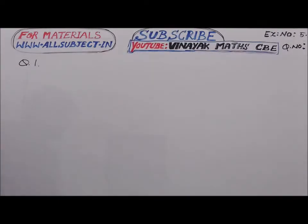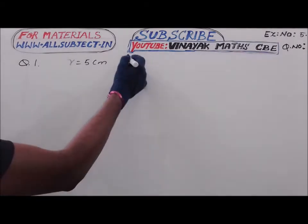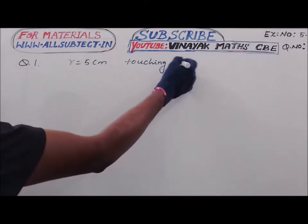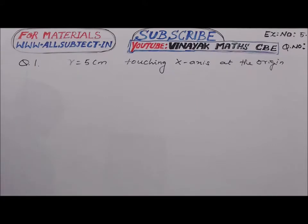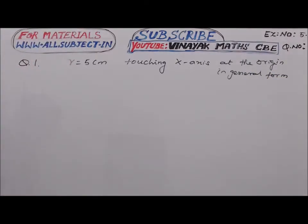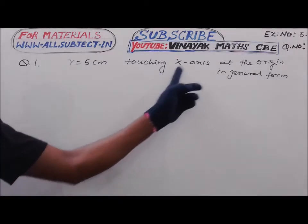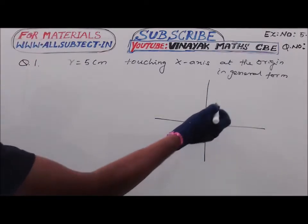Exercise 5.1, question number 1, from Chapter 5: Two-Dimensional Analytical Geometry. Obtain the equation of circles with radius 5 centimeters touching the x-axis at the origin, in general form.